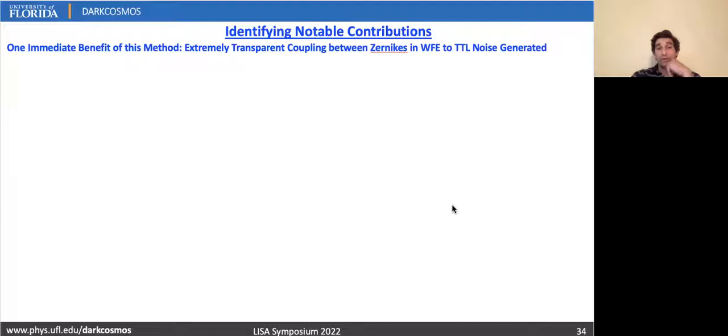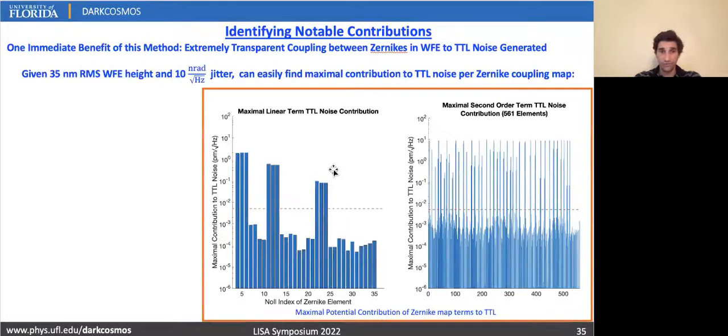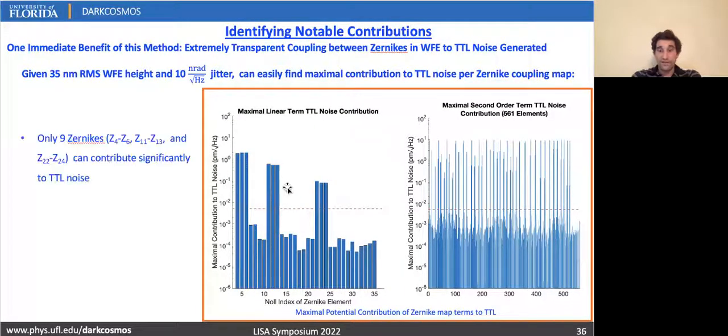And an immediate benefit of the polynomial recreation is the transparency between Zernike components and the relationship between Zernike components and the actual tilt length they introduce. We can easily find, using the maximal magnitude of the A and B maps, what the greatest possible tilt length noise contribution can be if we have 35 nanometers of RMS wavefront error and 10 nanoradians of in-band jitter. And that's shown here. On this left here, we see that only nine Zernikes can possibly contribute significant amounts linearly. These nine correspond to astigmatisms and defocus, as well as their higher order secondary and tertiary equivalents.